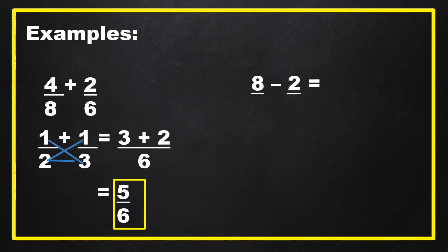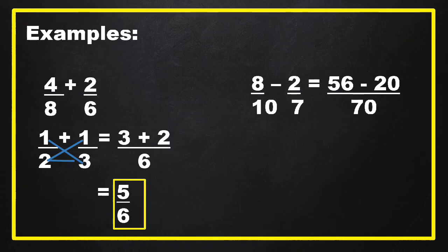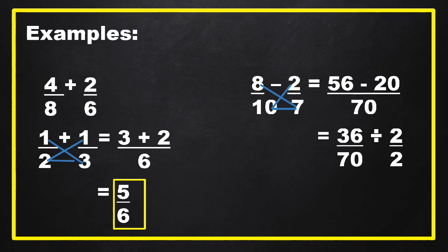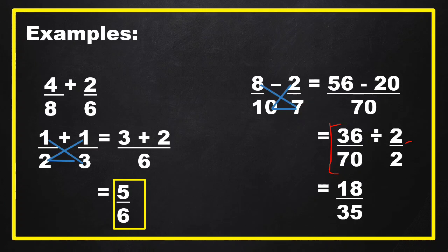Another example: 8 tenths minus 2 sevenths. Using cross-product: 8 times 7 equals 56, 10 times 2 equals 20, and 10 times 7 equals 70. Subtract the numerators: 56 minus 20 equals 36 over 70. Since 36 over 70 is not in lowest terms, we find the GCF, which is 2. 36 divided by 2 equals 18, and 70 divided by 2 equals 35. There is no common factor between 18 and 35, so 18 over 35 is the final answer.